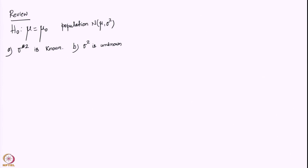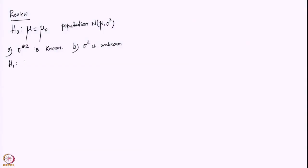In either case we would like to discuss, and have already discussed, the three alternatives. The first alternative is a two-sided alternative, that mu is not equal to mu-zero. The second alternative is that mu is greater than mu-zero, and the third is mu is less than mu-zero — under both cases of sigma-square known and unknown.